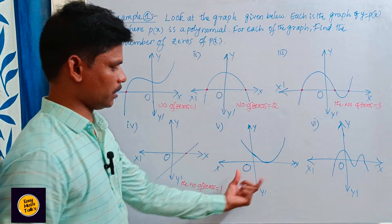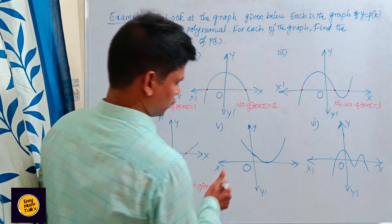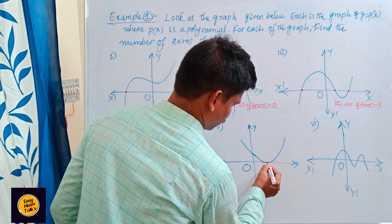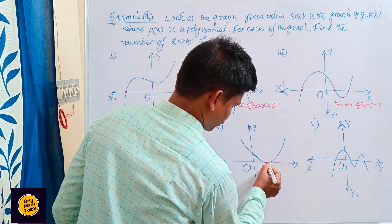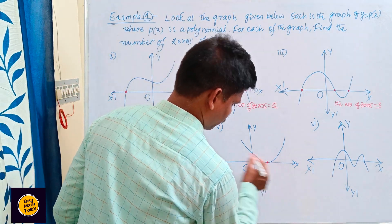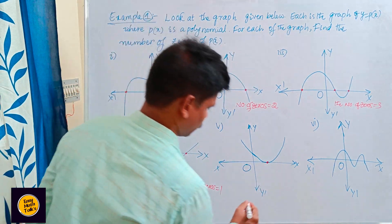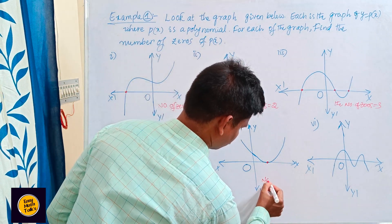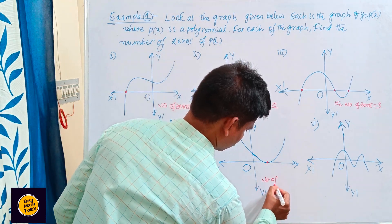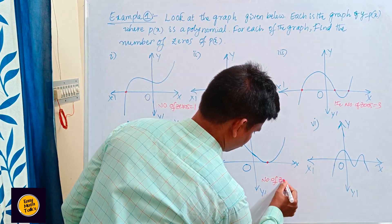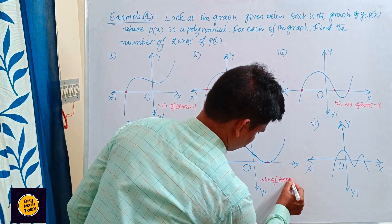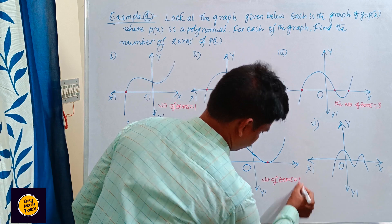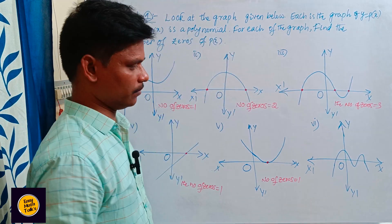Next, see this graph. Here also on the x-axis, it is intersected at only one point. So the number of zeros is equal to one.